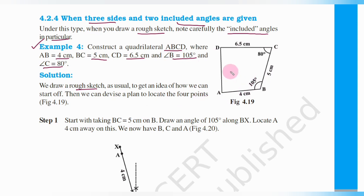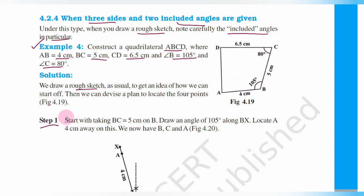We draw the rough figure to understand how construction should start. From the rough figure, we get an idea of how to construct the quadrilateral. Step 1: Start with taking BC equal to 5 cm — draw a 5 cm line segment.